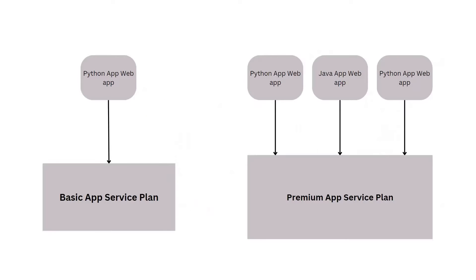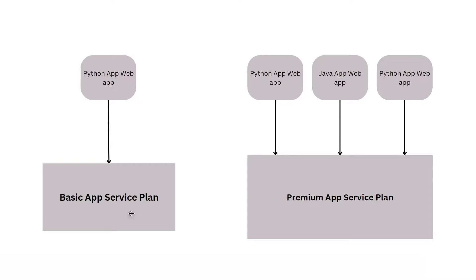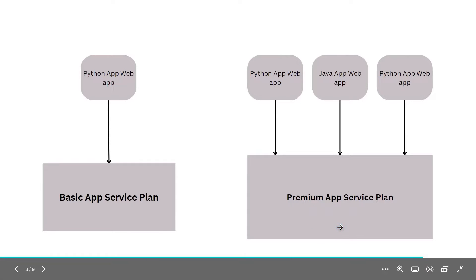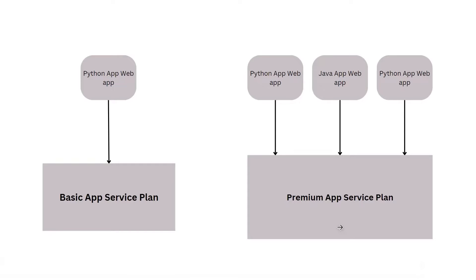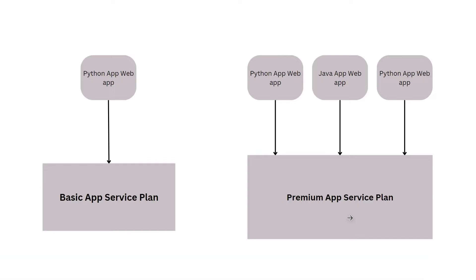The next question is: can we use a single app service plan for hosting multiple applications or multiple web apps? The answer is yes. With a basic app service plan you get less CPU and memory, so you may deploy only one web application. But with a premium app service plan, you get more CPU, memory, and instances, so you can deploy more applications. Please remember the app service plan and web apps or the app service should be created in the same region.